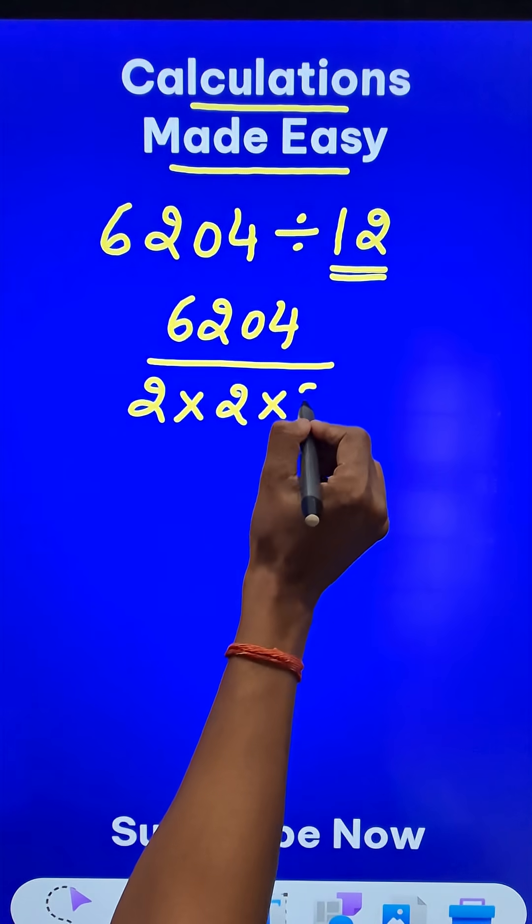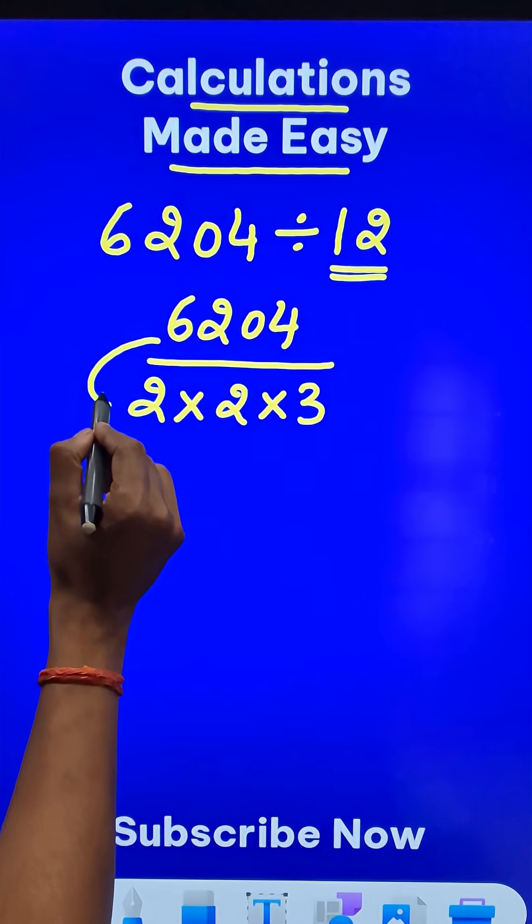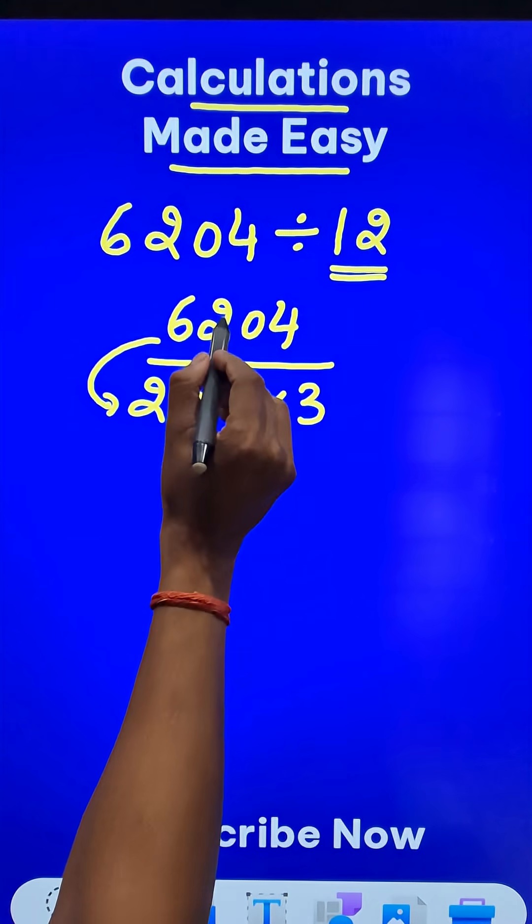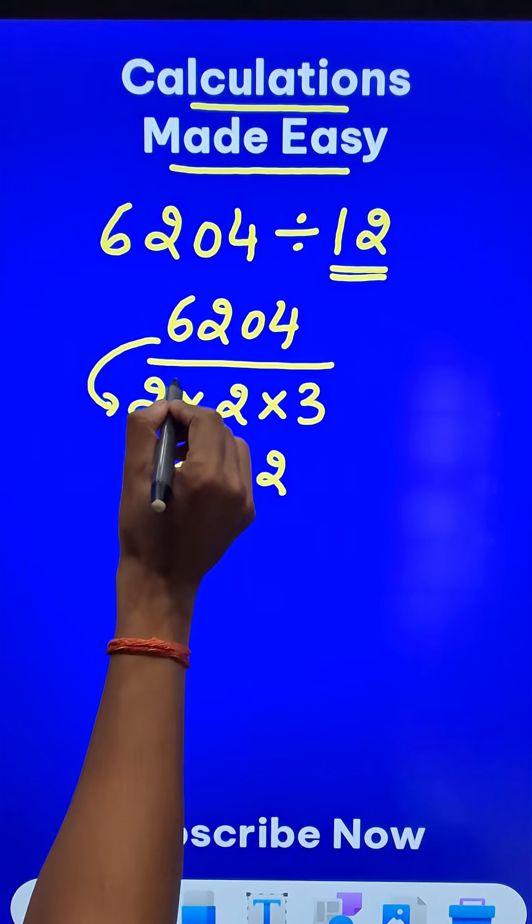And sometimes that helps a great deal in understanding division. So division by 2 is actually halving. If we take half of 6204, we will get 3102. And now one of the divisors is gone and we have only 2 into 3.